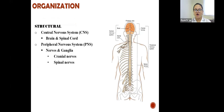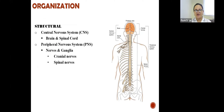According to the general anatomical organization, structurally, the central nervous system consists of the brain and spinal cord, and the peripheral nervous system consists of nerves and the ganglion. The nerves consist of cranial nerves as well as the spinal nerves.